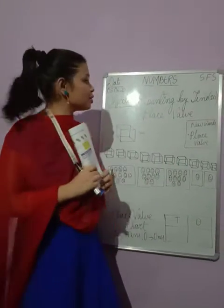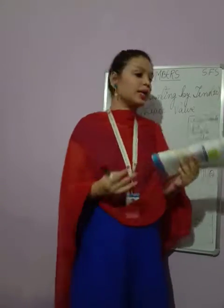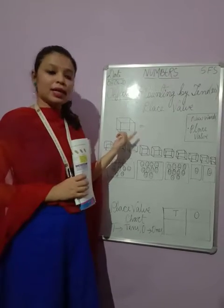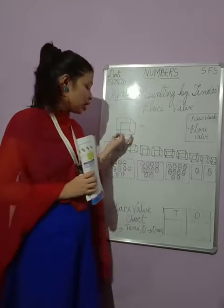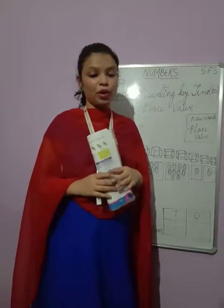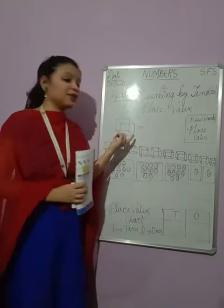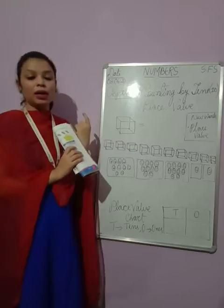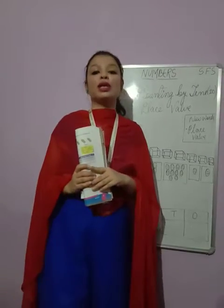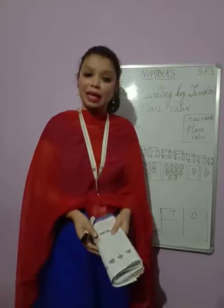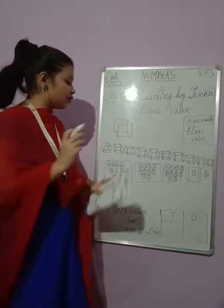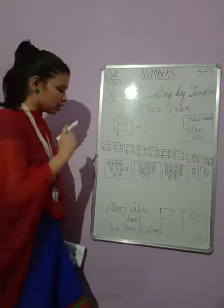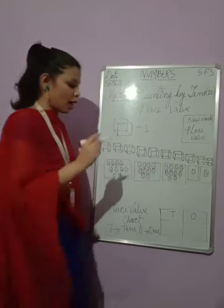Today we are going to count by 10. So what is meant by counting by 10? Can you see this object? This shape, which you saw in the first chapter, is known as a cube. Here in the chapter on numbers, it is known as a block — B-L-O-C-K, block. The value of 1 block is 1.